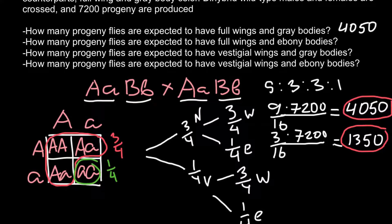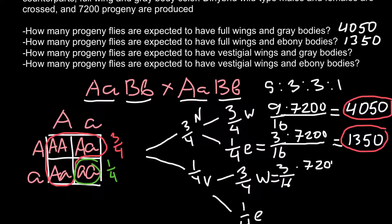The answer to the second question is 1350. The third question asks how many progeny flies are expected to have vestigial wings and gray bodies. That is one-quarter multiplied by three-quarters, which gives three-sixteenths. Multiplying by 7200, we get the same number: 1350. So 1350 is the answer for the third question as well.